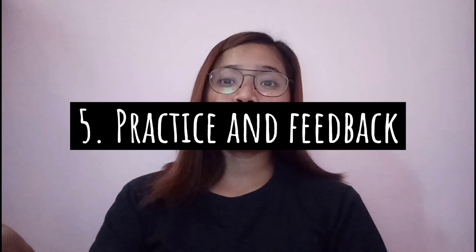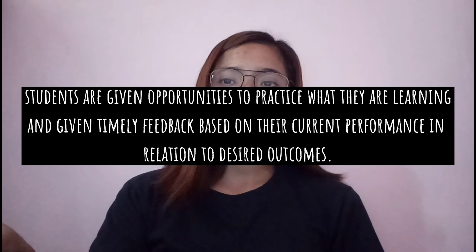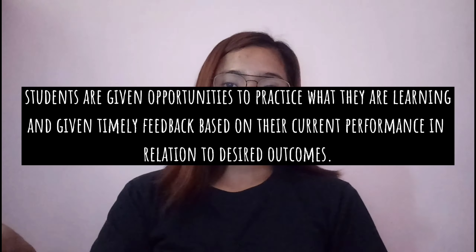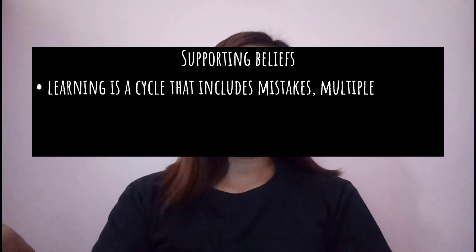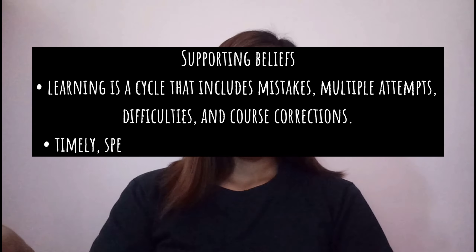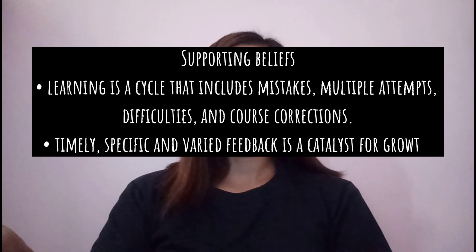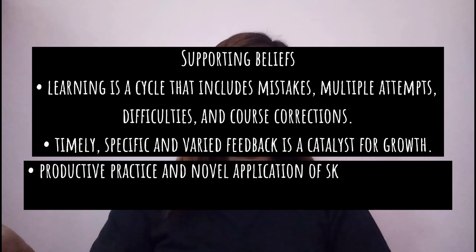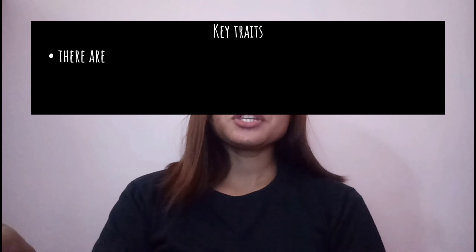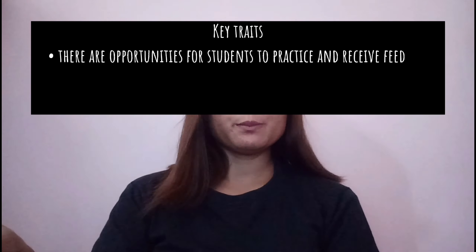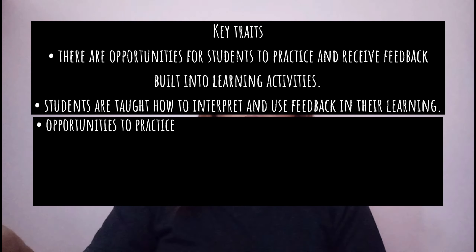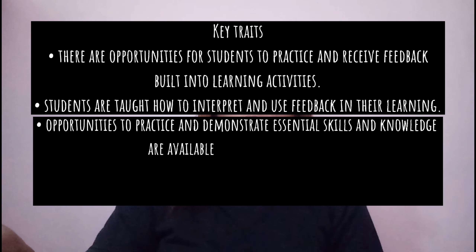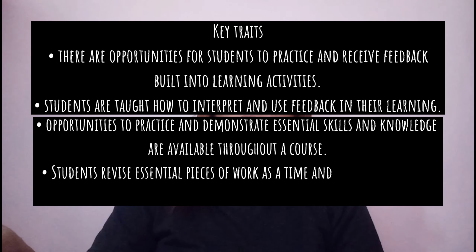The fifth element is practice and feedback. Students are given opportunities to practice what they are learning and receive timely feedback based on their current performance in relation to desired outcomes. Supporting beliefs: learning is a cycle that includes mistakes, multiple attempts, difficulties, and course corrections; timely, specific, and varied feedback is a catalyst for learning; and productive practice and meaningful application of skills are essential for learning. Key traits: opportunities for students to practice and receive feedback are built into learning activities; students are taught how to interpret and use feedback; opportunities to practice essential skills are available throughout a course; and students revise essential pieces of work as time and resources allow to demonstrate growth.